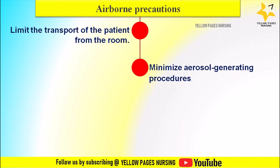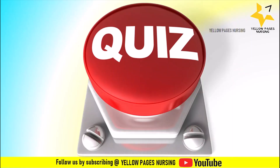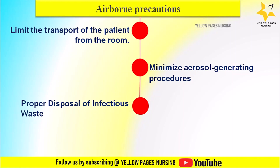Minimize aerosol-generating procedures whenever possible. If such procedures are necessary, follow appropriate infection control protocols to reduce transmission risk. Strict protocols for the disposal of infectious waste should also be followed to prevent contamination and potential spread of airborne pathogens. Specific measures for airborne precautions can vary by disease, so refer to the latest guidelines from the Centers for Disease Control and Prevention or your own institutional policies.